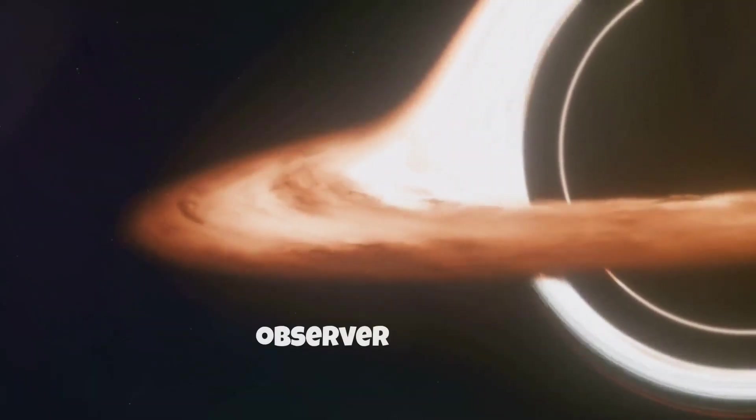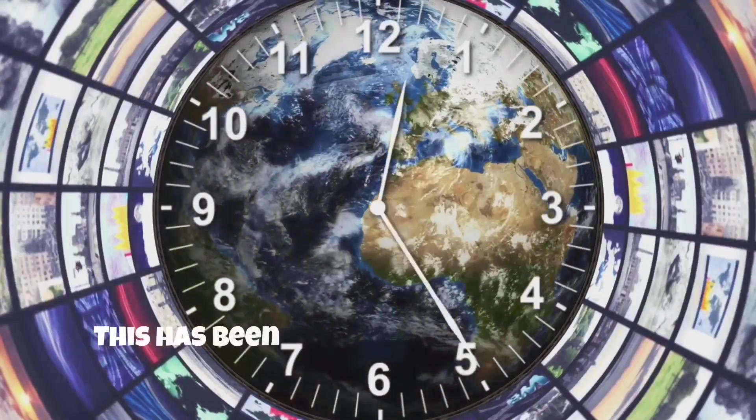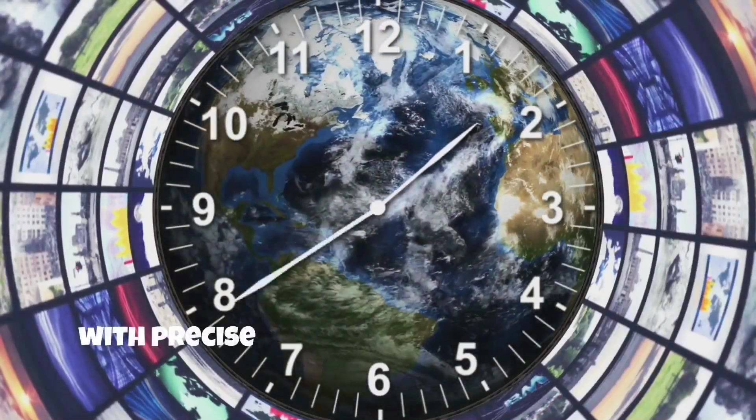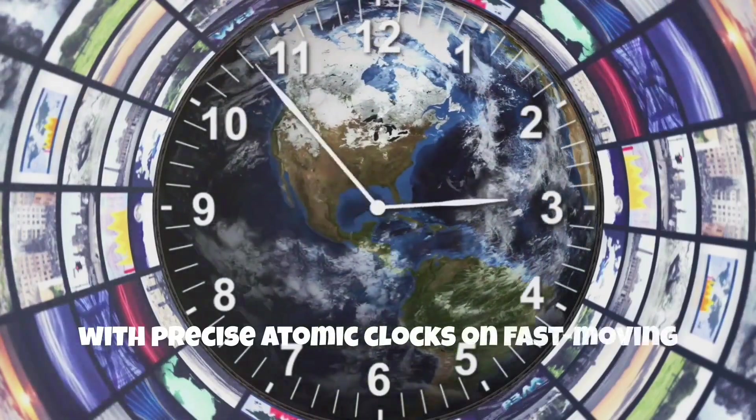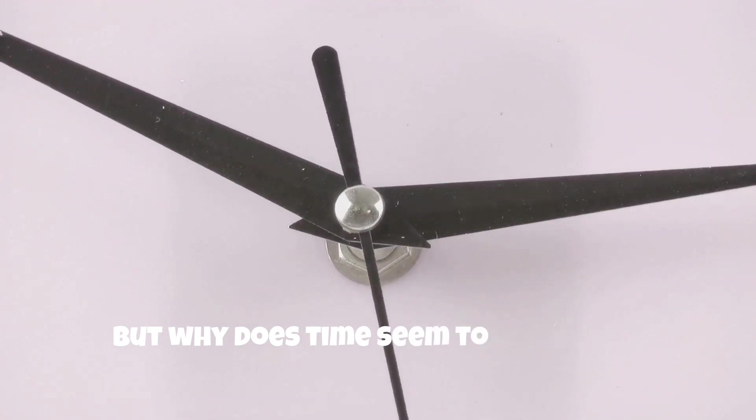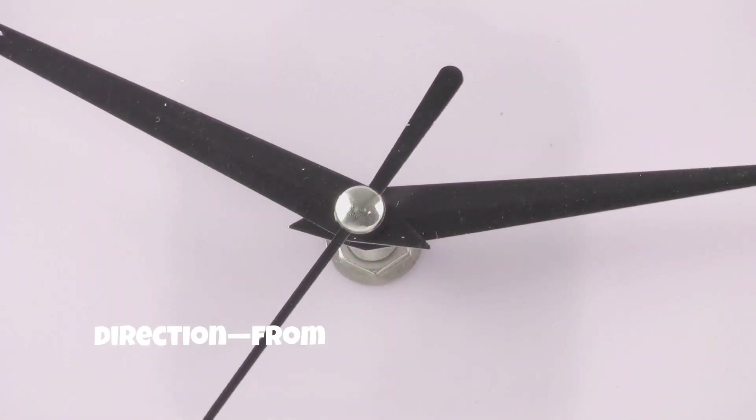When an object moves at high speeds or is near a massive object, time slows down for it relative to an observer at rest. This has been experimentally confirmed with precise atomic clocks on fast-moving planes and in orbit.